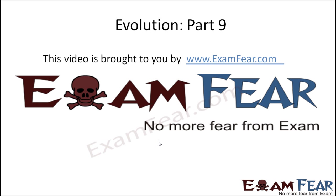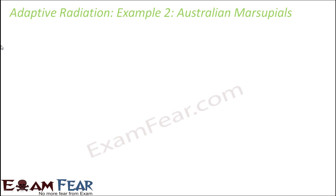This video on evolution part 9 is brought to you by examfear.com. Let us look at another example of adaptive radiation. We are going to talk about the Australian marsupials. These marsupials started as very small creatures but later evolved into many different species. They are called Australian marsupials because they arrived in Australia around 55 million years ago.